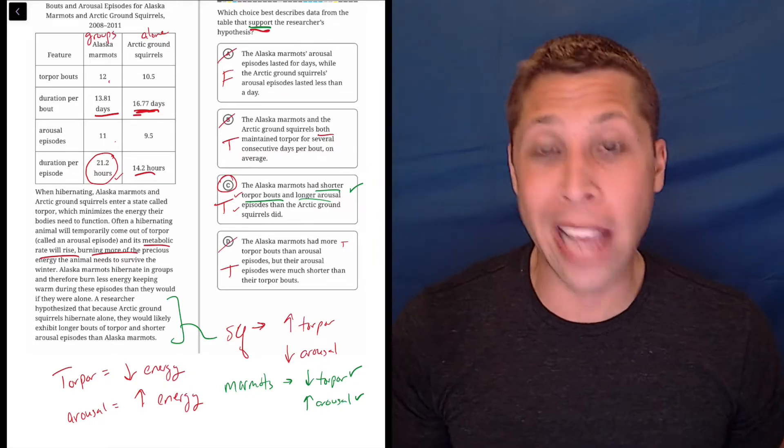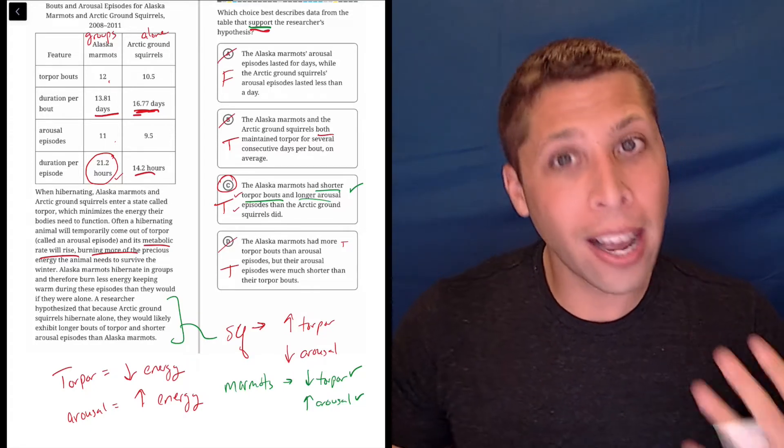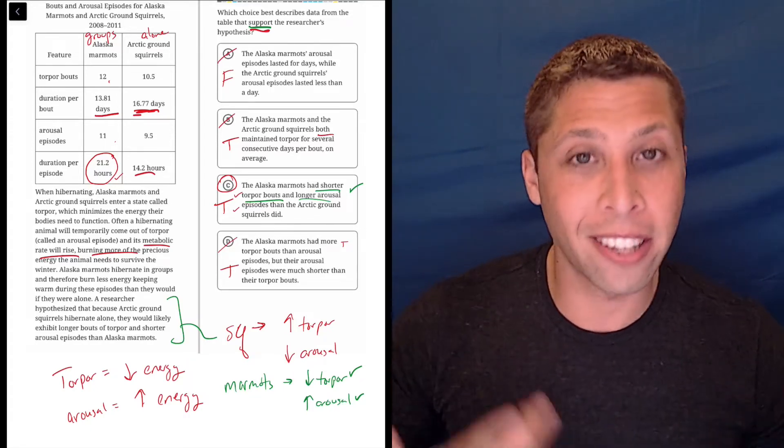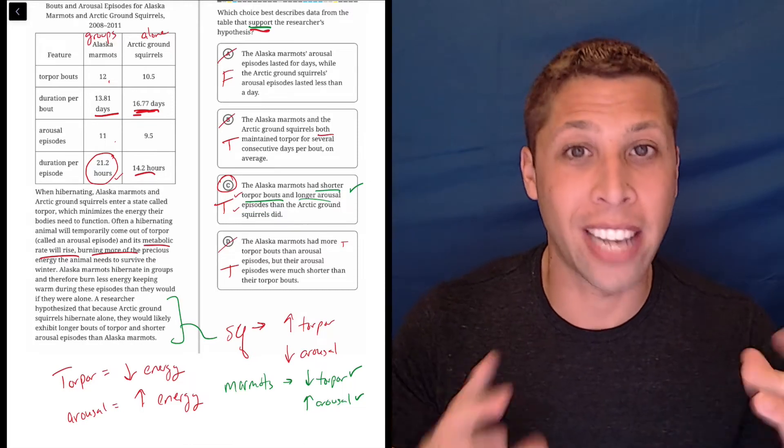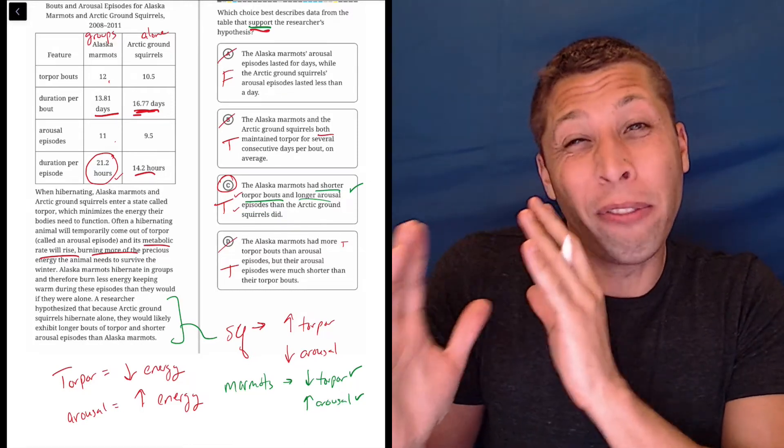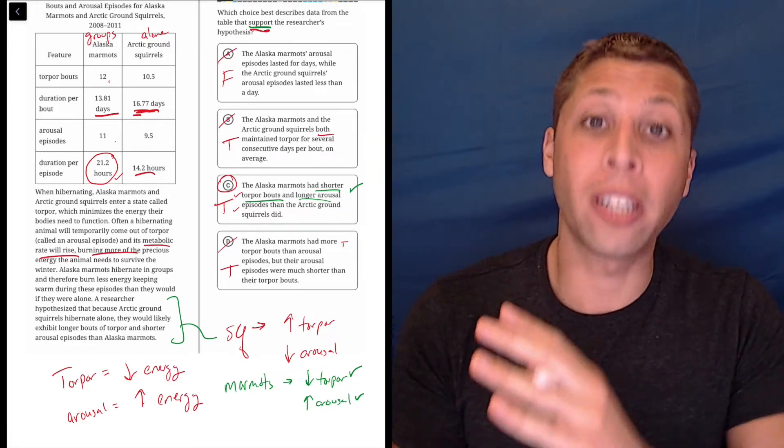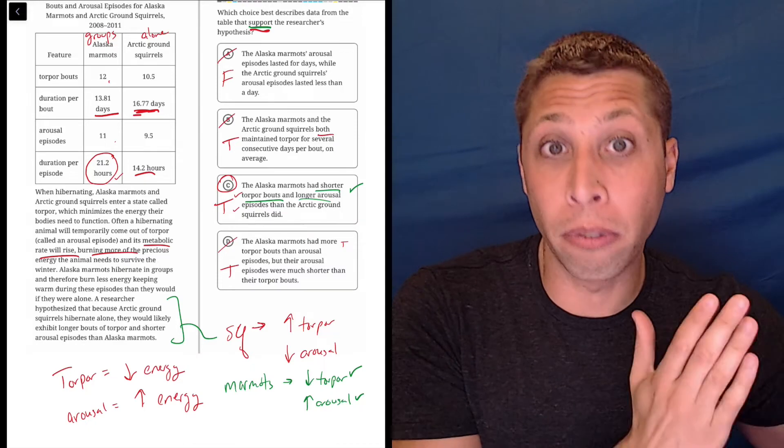So I just contrasted up with down, right? And maybe it takes a little bit of a leap of faith, but I think we're seeing on this digital test that there's a lot of questions that involve these kind of flips where the SAT is giving you one version of the trend and your job for the question is to think about what happens if we reversed it.